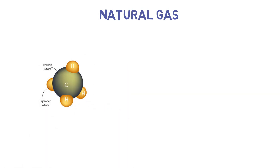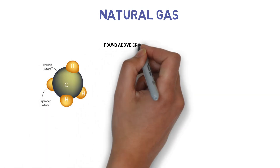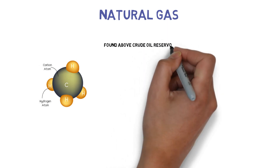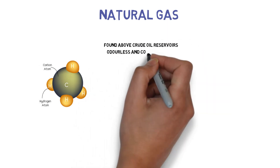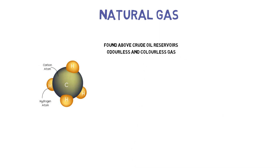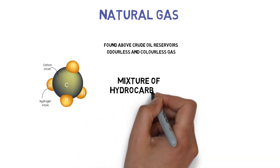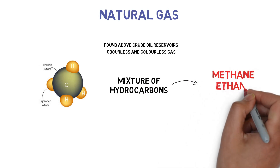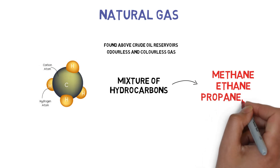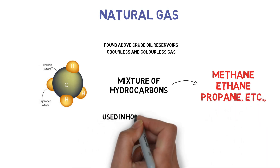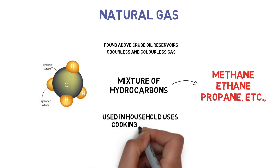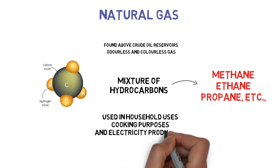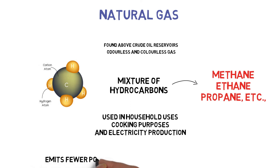Natural gases are found above crude oil reservoirs. It is an odorless and colorless gas. It is a mixture of hydrocarbons, most likely methane, ethane, propane, etc. It is used in household uses, cooking purposes, and electricity production. Natural gas emits fewer pollutant gases than other fossil fuels.